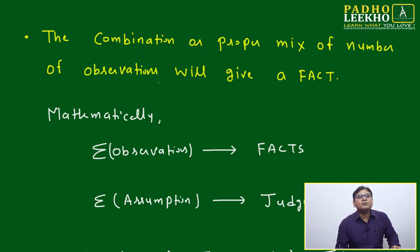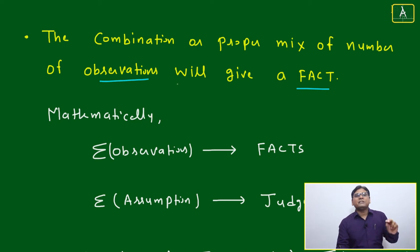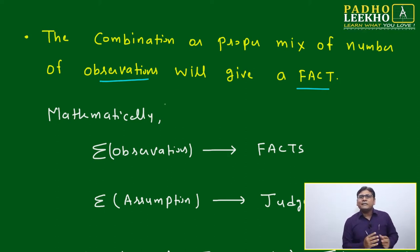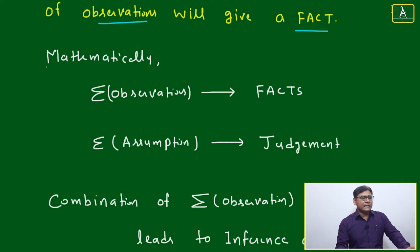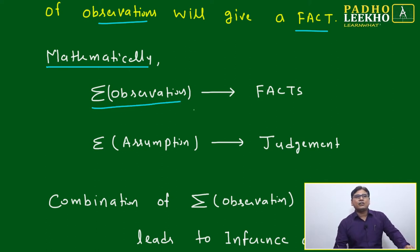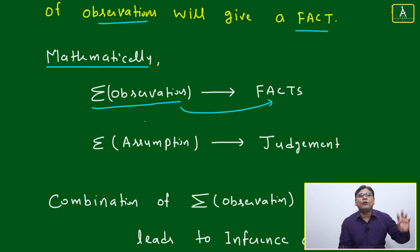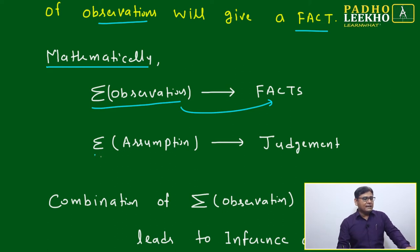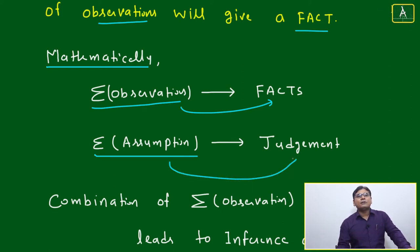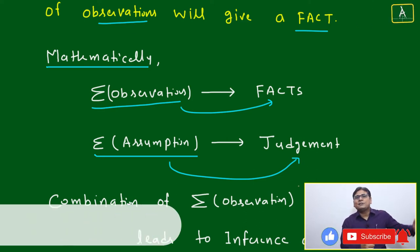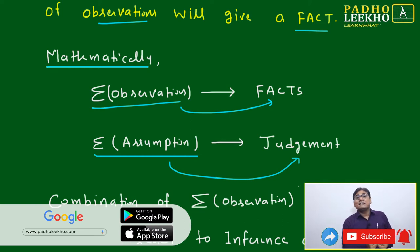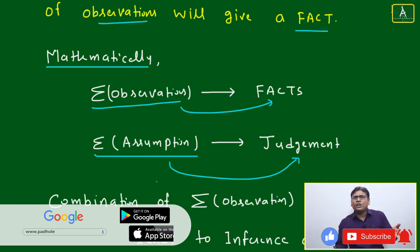A proper mix of a number of observations will give a fact. Mathematically, you can say fact equals the summation of observations — the sum of all observations. If you are making the summation of all assumptions, that will be called judgment. All types of assumptions combined together create judgment.